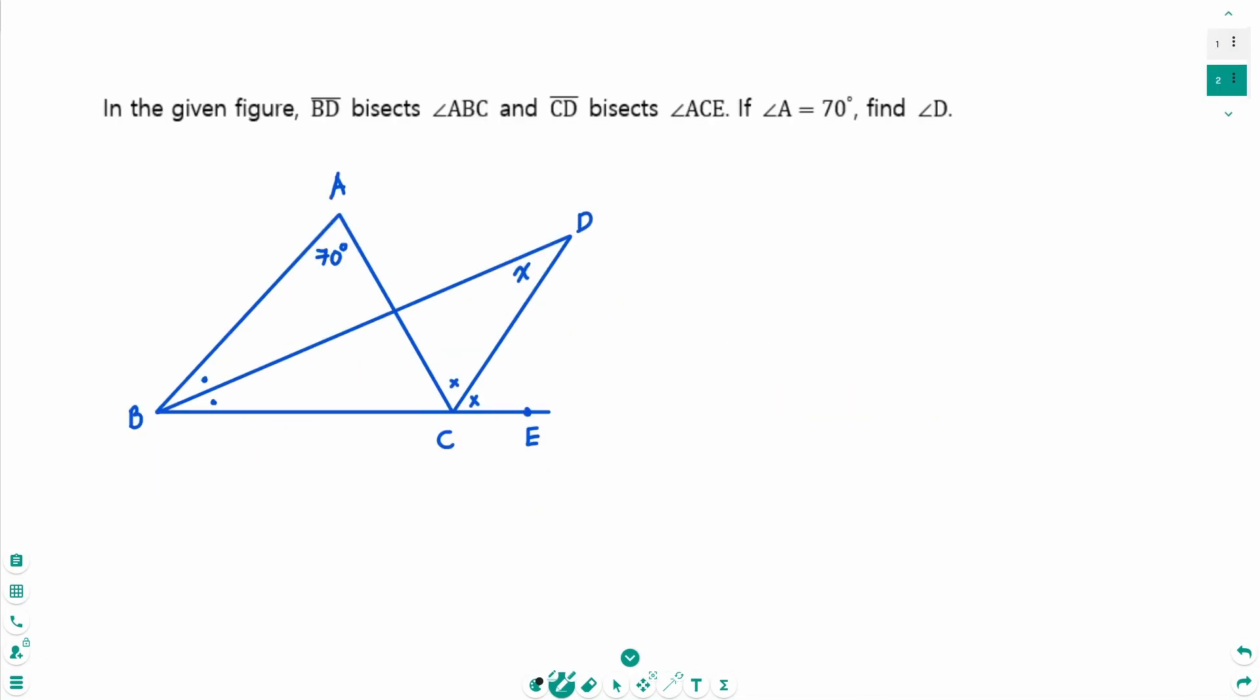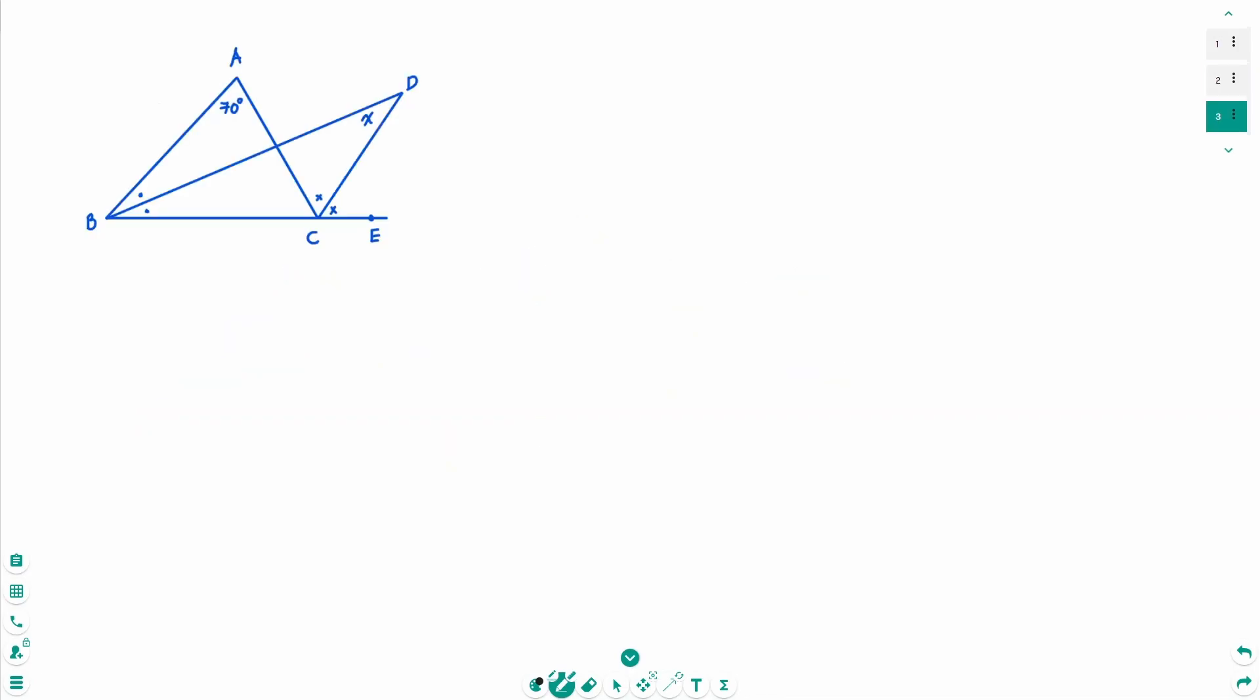The angle X is 70 degrees divided by 2 equals 35 degrees. That angle D equals 35 degrees. That's the answer. Now, let's check if this answer is correct.